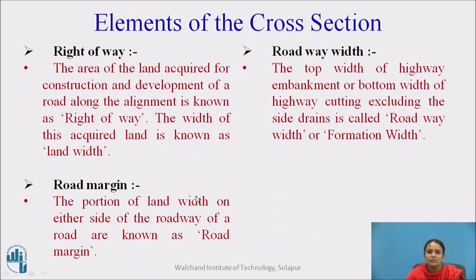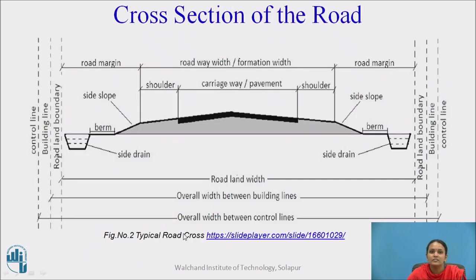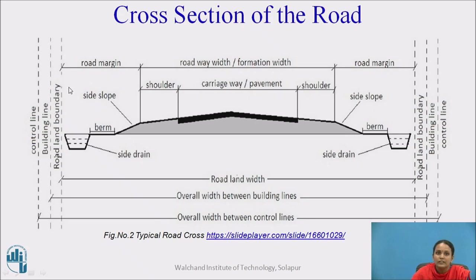Road margin means it is the margin from the road boundary or the building line. Road margin is the distance between the road boundary and the roadway width — as seen in the figure, with the building line on one side and the road boundary on the other.